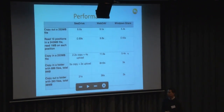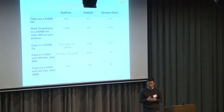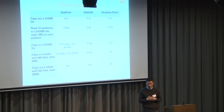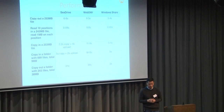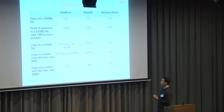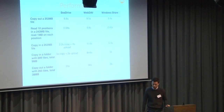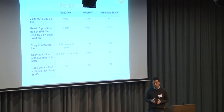For performance data, we tested a few cases comparing SeaDrive, WebDAV, and Windows Share. Performance for SeaDrive and Windows Share is quite close in a LAN environment. For copying a lot of small files out of the drive client, it is currently much slower than Windows Share, but this is an implementation issue and we can optimize it later. For WebDAV, copying a lot of files can be quite slow because it involves many database updates.